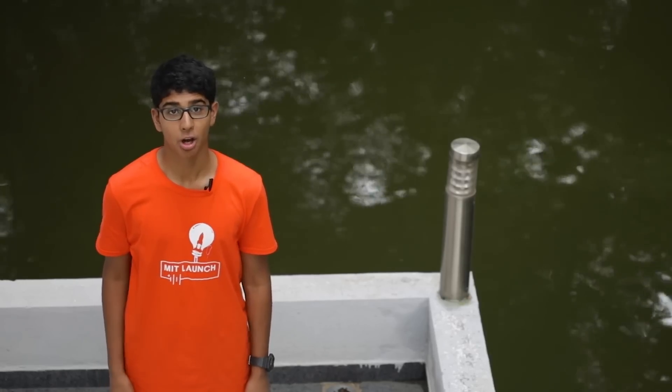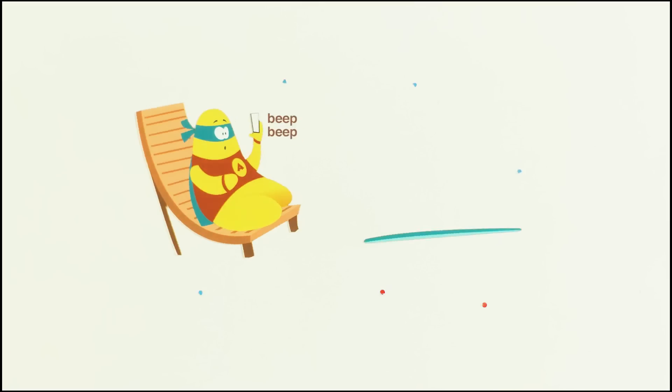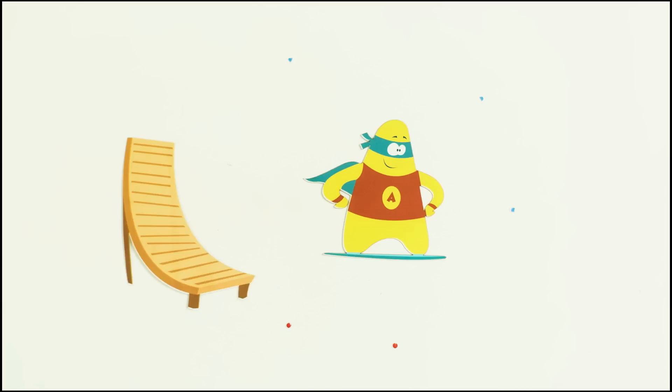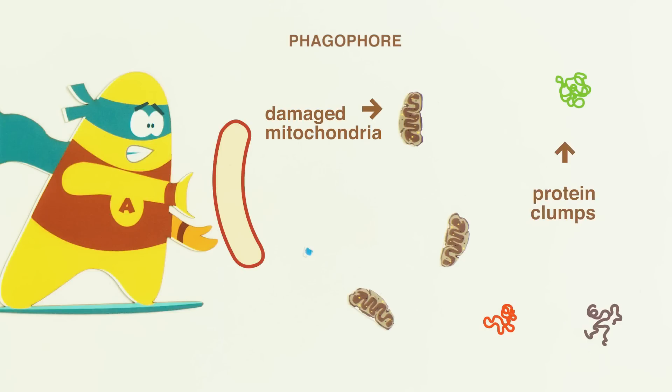One day, Autophagy gets a mission to round up the city garbage and deliver it to the recycling center. Our man jumps on his surfmobile and kicks off. Using his keen eye for spotting damaged organelles and protein clumps, he starts to bag them.